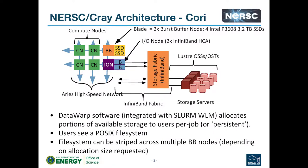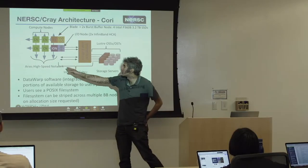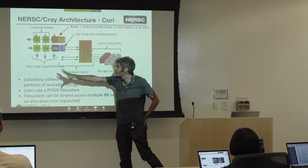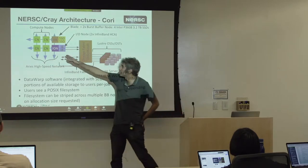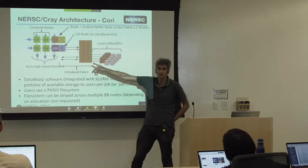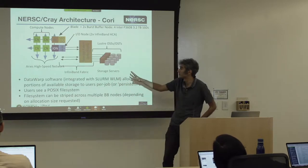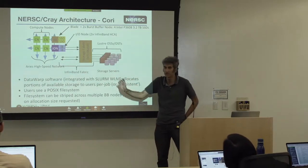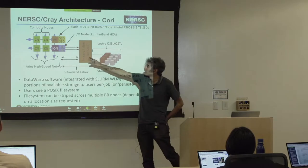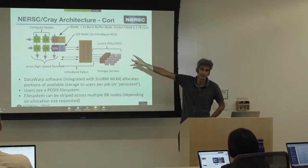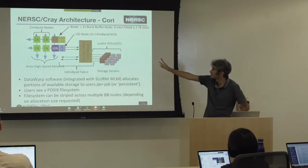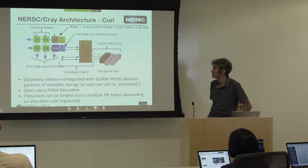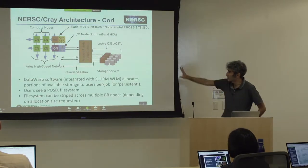The architecture of the burst buffer at NERSC on the Cori system — don't try to use this on Edison — is part of the ARIES high speed network, replicated several times. You have compute nodes and conventional I/O nodes that talk to the Lustre file system on a different fabric. But you also have nodes that look very much like I/O nodes, except instead of connecting to the file system, they have SSDs directly in them.